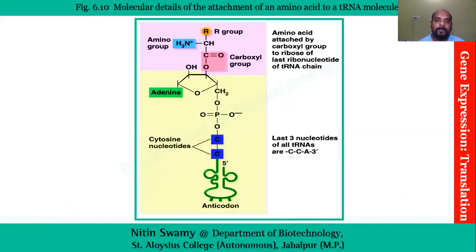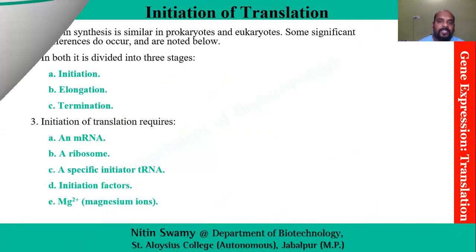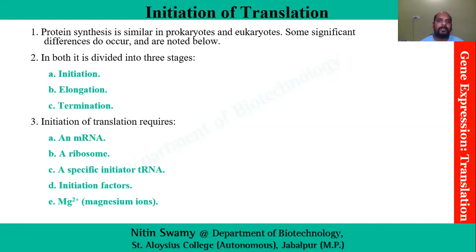Now our amino acid is charged — we have an aminoacyl-tRNA ready. So now we will go into the process of translation. We can divide translation into three phases: initiation, elongation, and termination. There are some similarities between prokaryotic and eukaryotic translation, but there are differences too. Here we are studying the general mechanism of prokaryotes.